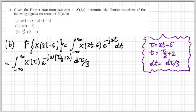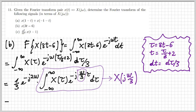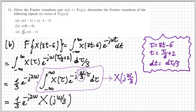I can bring the factor one third outside of the integral, and also the exponential e^{-j2ω}, because it does not depend on τ, which is the integration variable. I'm left with a simple integral — what is this? It's a Fourier transform, but not in the variable ω; it's in the variable ω over 3. So it's X(jω/3). The Fourier transform I'm looking for is therefore one over 3 · e^{-j2ω} · X(jω/3).